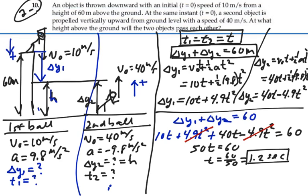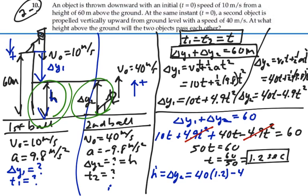We see that our height above the ground, h, that right there is the same as our delta y2. So if we can plug in this time into delta y2, we can get our height. So h should equal delta y2, and that's going to be equal to 40 times t, 1.2, minus 4.9 times t squared, 1.2 squared. If we figure that out, we get 40.9 meters. So that's our answer. The height above the ground where these two balls pass each other is 40.9 meters.